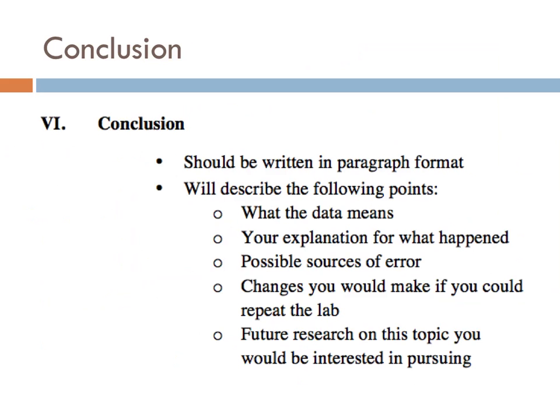The final component of your lab report is the conclusion, which, like the introduction, should be written in proper paragraph form. This can be a rather sizable component and it needs to address five different points. First, explain what the data means — summarize in words what your graph shows. Second, explain why whatever happened occurred in your opinion. Third, describe any sources of error from your experiment. No matter how carefully you conduct your experiment, there will always be some potential sources of error or bias, and you just need to acknowledge them.